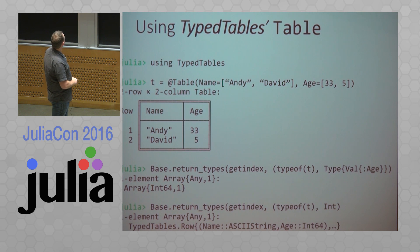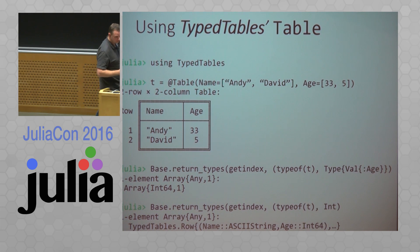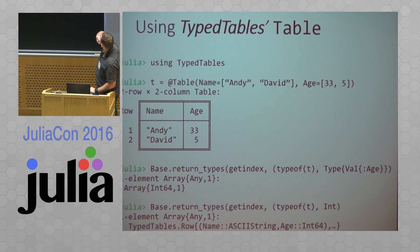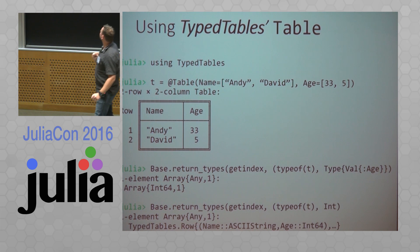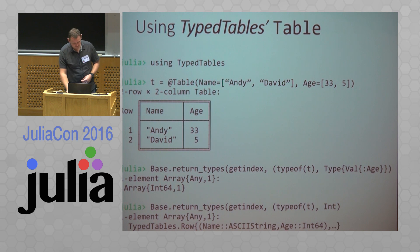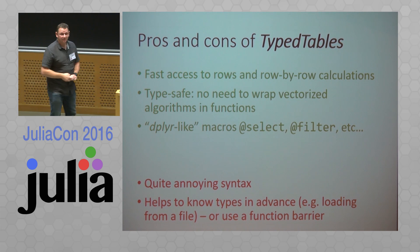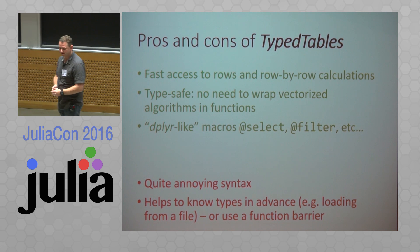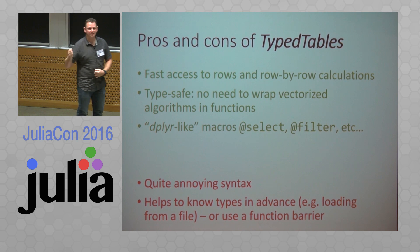By using a very large number of generated functions you can actually get this through type inference and have really fast code coming out, even for row-by-row access. Here in the top line I'm using a macro to construct the table — it's just a slightly more convenient syntax that's the same as DataFrame. When you look at the return types of getindex for columns, you can see that if you're getting the age column indicated by Val(:age) you actually get Array{Int64,1}, and if you look at a particular row by indexing with an integer you actually get a row with a well-defined type.